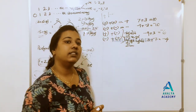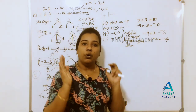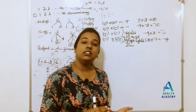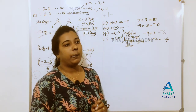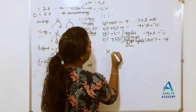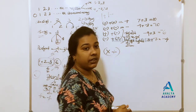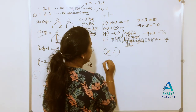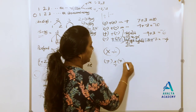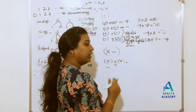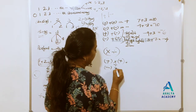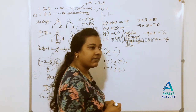If you have one person, you can have one person and you can have one person. Multiplication and division are one. Multiplication and division will be positive. One child is plus and minus.